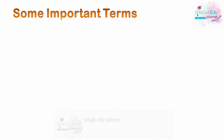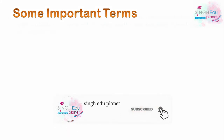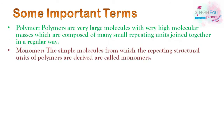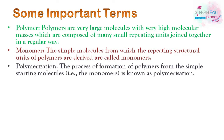The first important term is polymer — polymers are very large molecules with high molecular masses, composed of small repeating units. These small repeating units are called monomers. The simple molecules from which the repeating structural units of polymers are derived are called monomers. Polymerization is the process of formation of polymers from simple starting molecules, that is, the monomers.